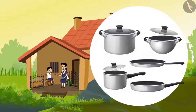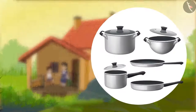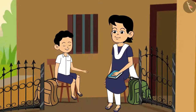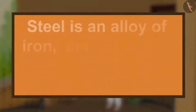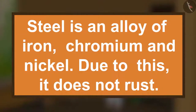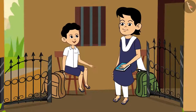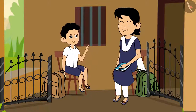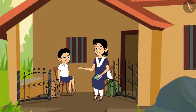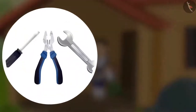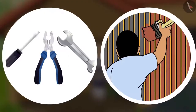Steel utensils are also made of iron, but rust is never seen on a steel vessel. Steel is an alloy of iron, chromium, and nickel — due to this, it does not rust. This means that iron can be protected from rusting. Other simple measures include keeping appliances dry, keeping them away from water, and painting iron items. By doing this, we can save our belongings from rusting.